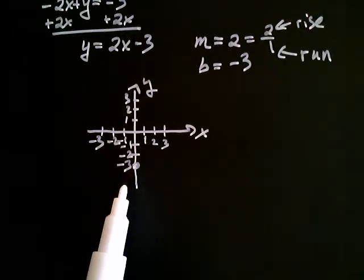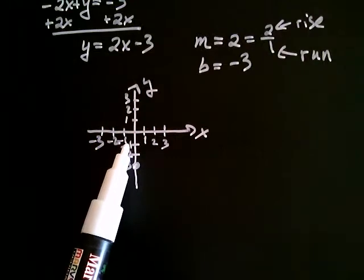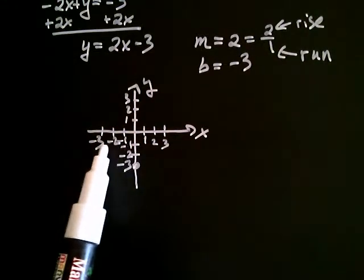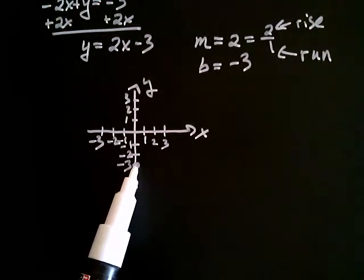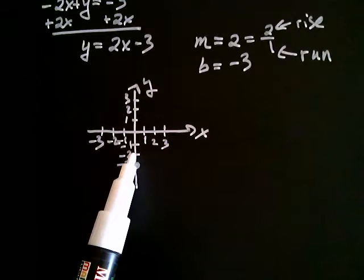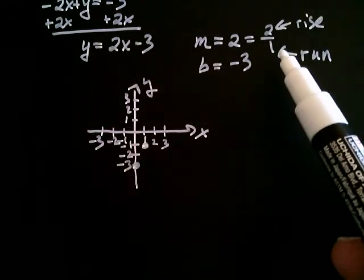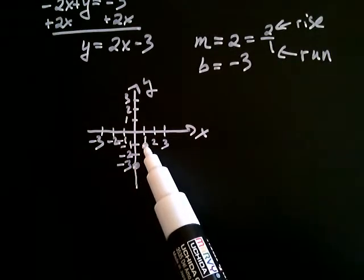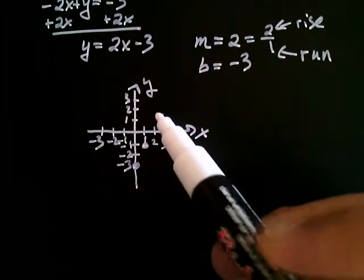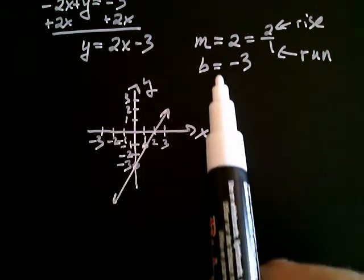From here we're going to rise 2. Rise refers to movement along the y-axis, so if the rise is positive that means we go up 2. And also we run 1 — run is for the x-axis, so a positive 1 means we go 1 to the right. I rise 2 and run 1, and that puts me at a second point on the line. Now that I have two points, I can graph my line through those two points. And that's how we graph a line using the y-intercept and the slope.